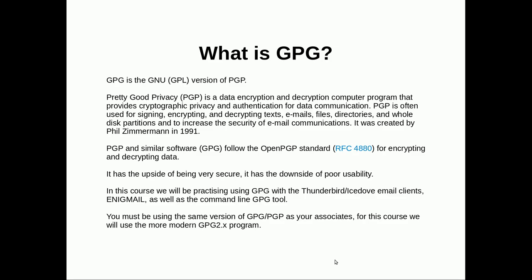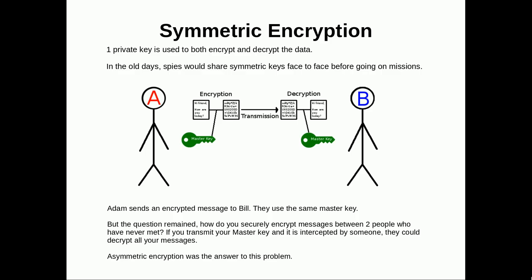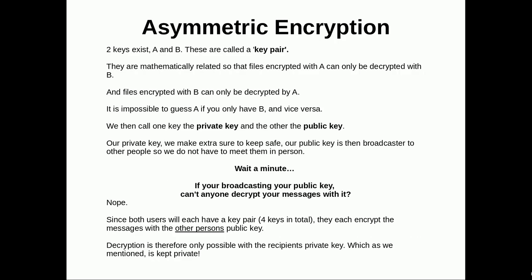Symmetric encryption: one private key is used to both encrypt and decrypt the data. In the olden days, spies would share symmetric keys face to face before going on missions. Here we have two spies — they've each shared the master key, which they carry around on them, and they use it to encrypt and decrypt messages. But the question remained: how do you securely encrypt messages between two people who've never met? If you transmit your master key and it's intercepted, someone could decrypt all of your messages. Asymmetric encryption turned out to be the answer to this problem.